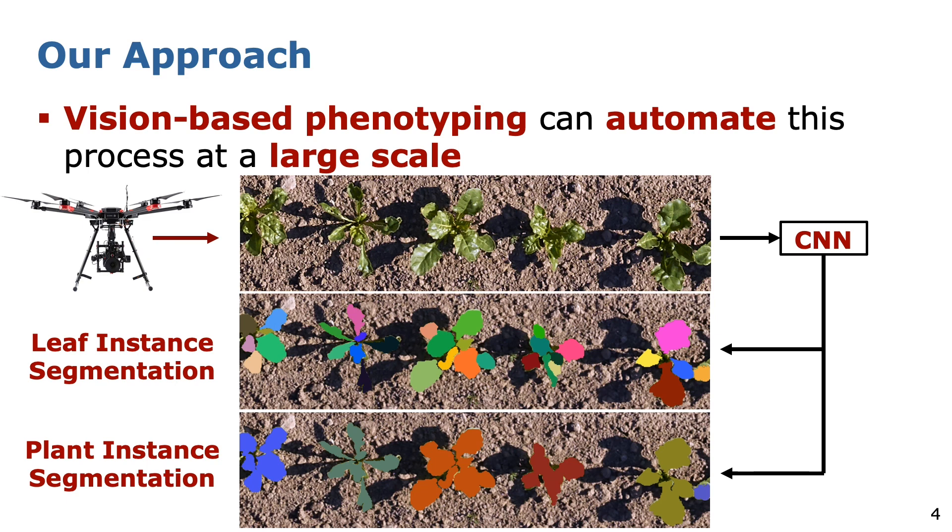First, an instance segmentation of crop leaves, where we visualize pixels belonging to the same leaf in the same color. Second, an instance segmentation of each crop plant, which we model as the union of its associated leaves. Finally, this enables us to compute relevant basic phenotypic traits for individual crops on real agricultural fields.